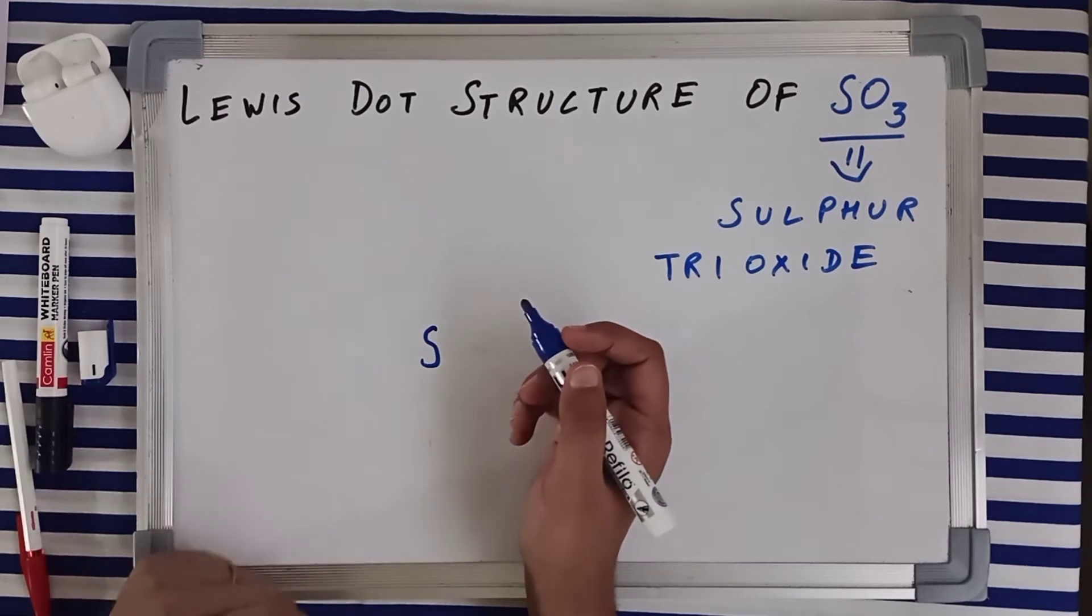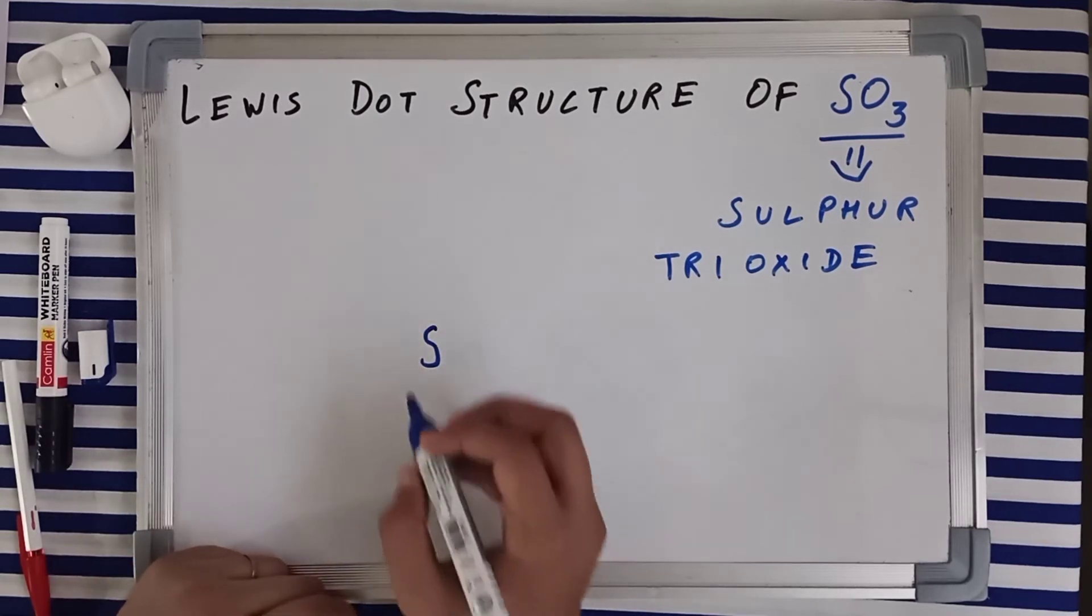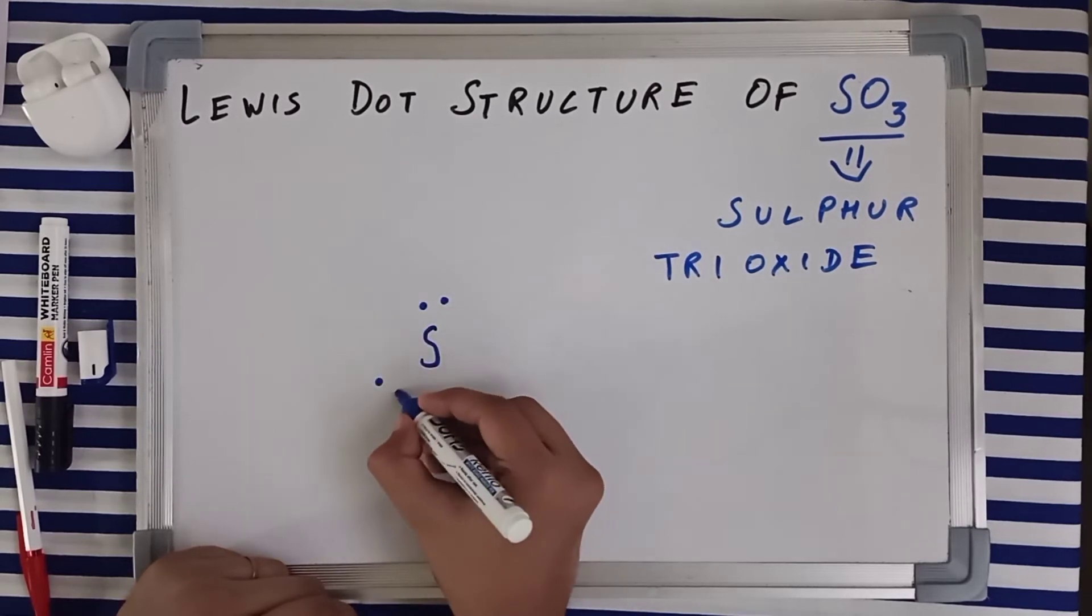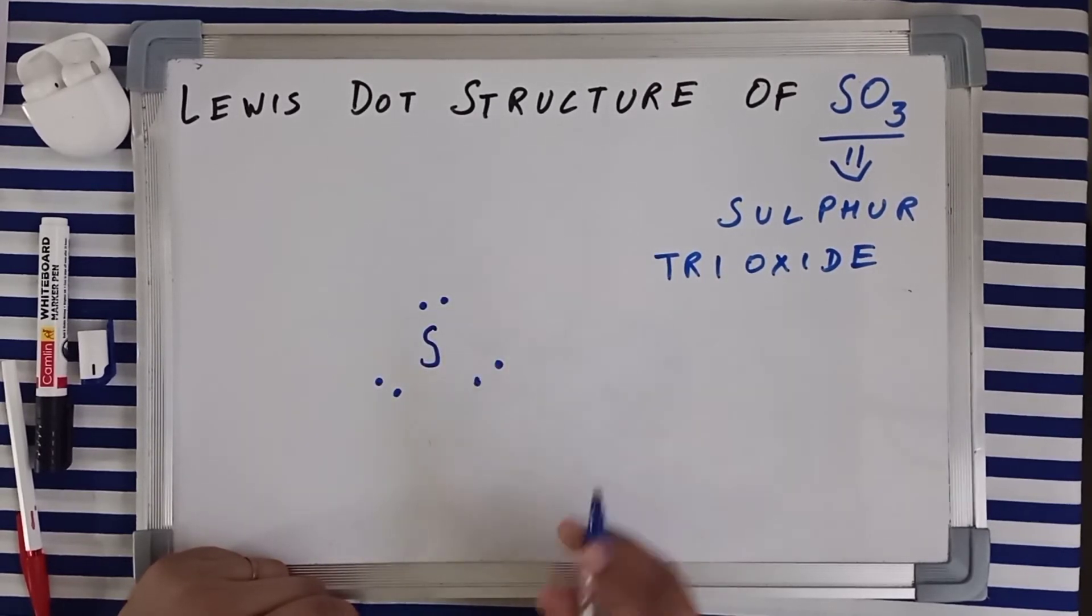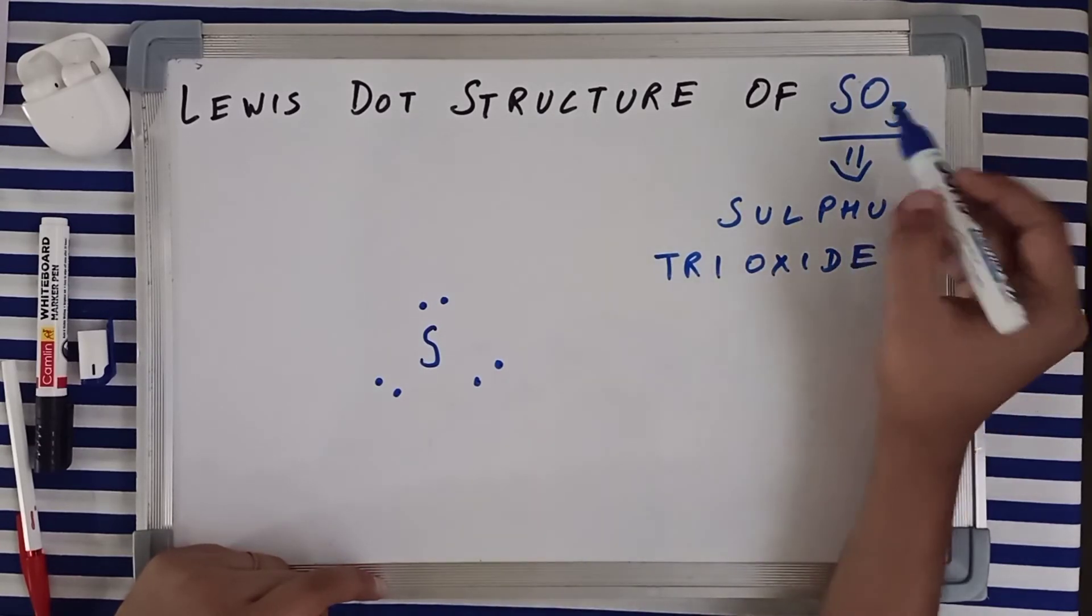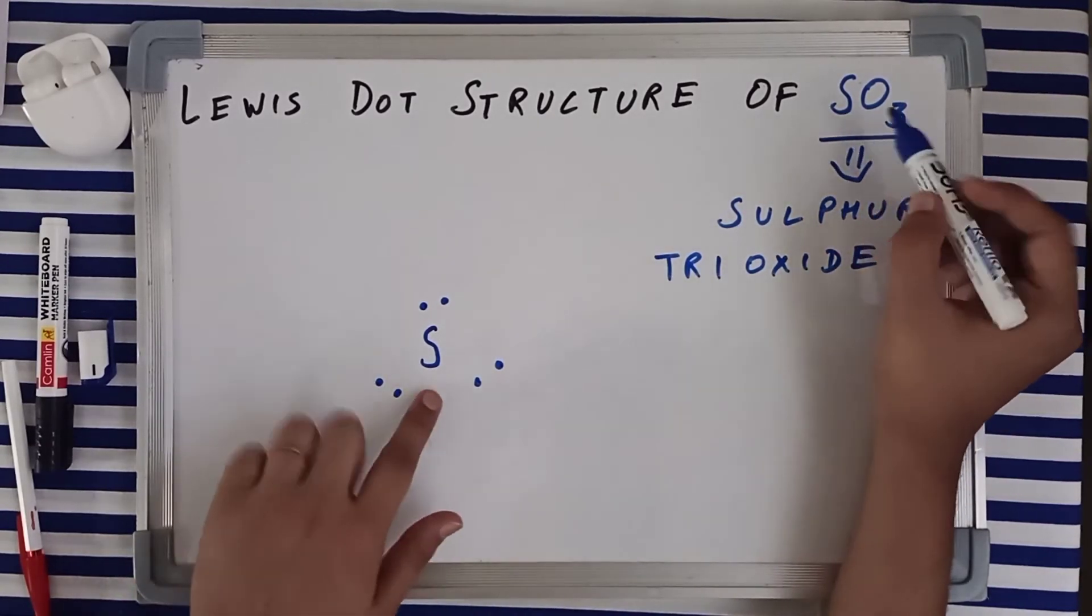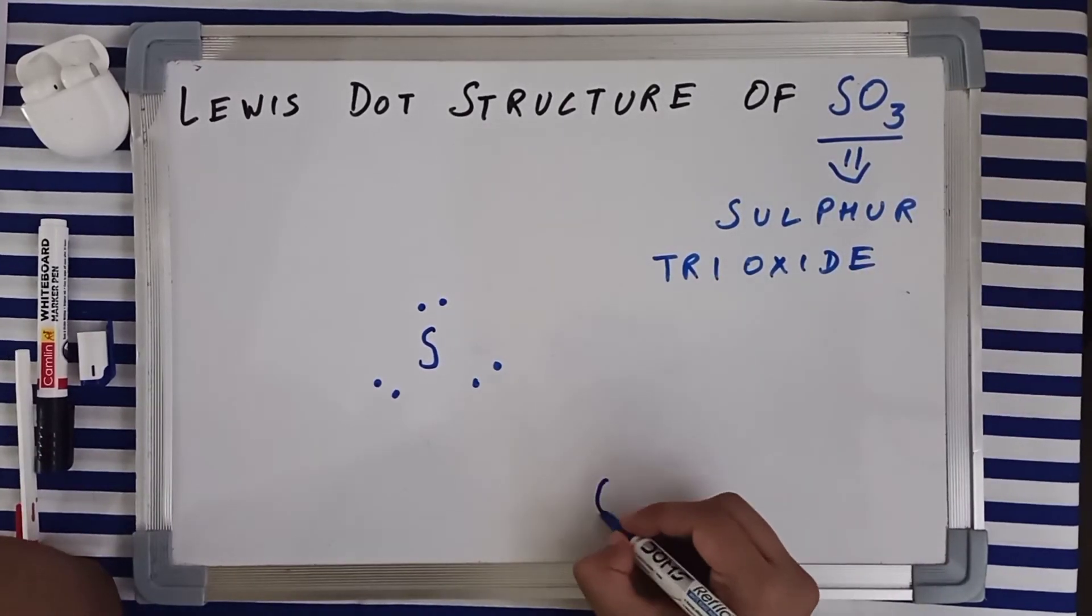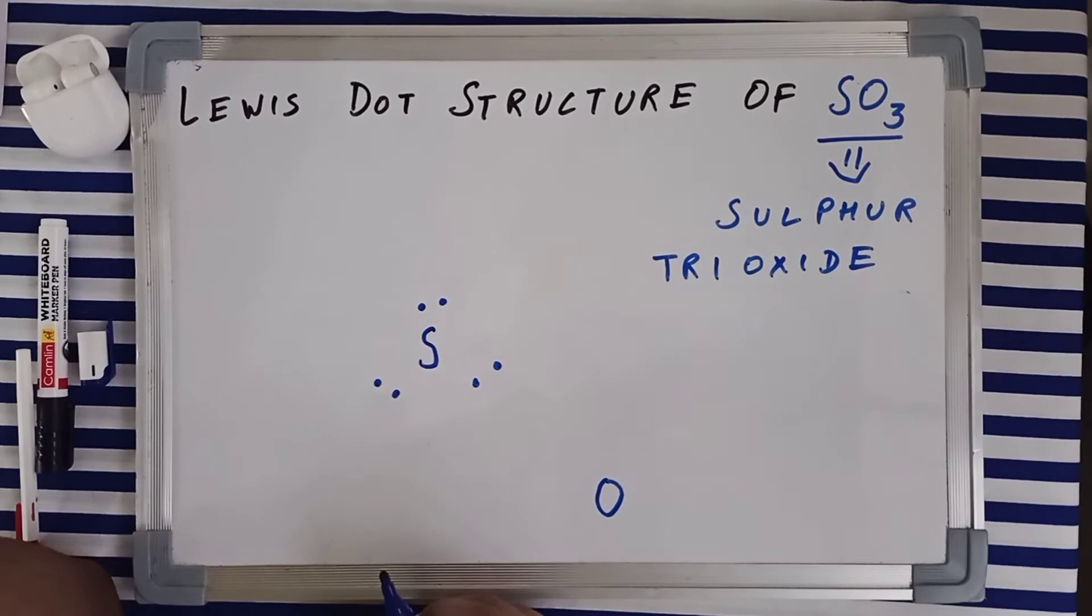Now let's move along. So sulfur can make six bonds and it had six valence electrons too. So one, two, three, four, five, and six valence electrons, and it can make six bonds. Now you've got just a single sulfur, your central atom, and you've got three oxygen atoms. I can place it like the vertices of a triangle.